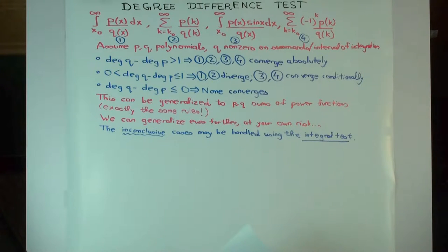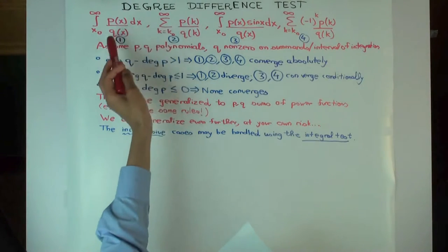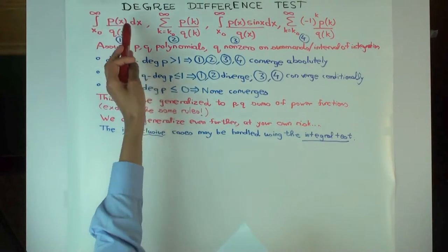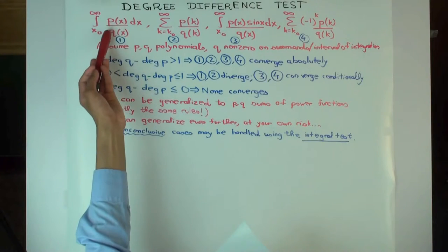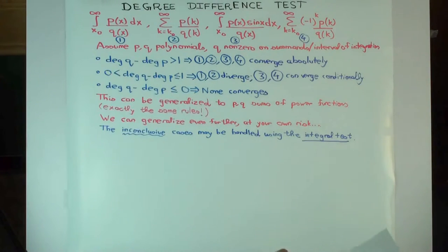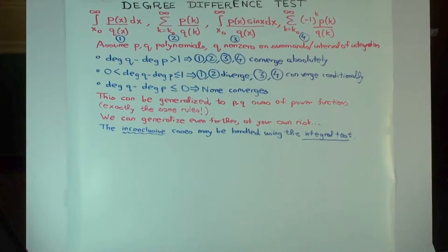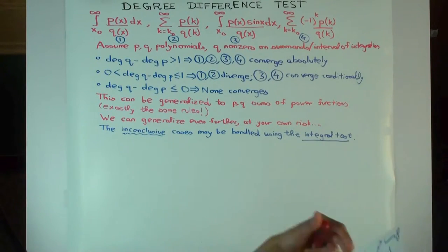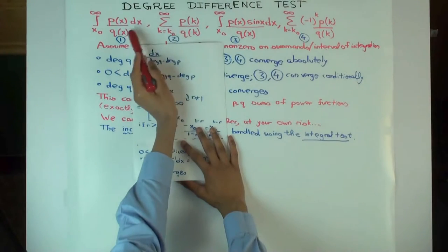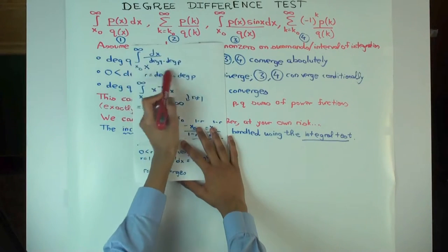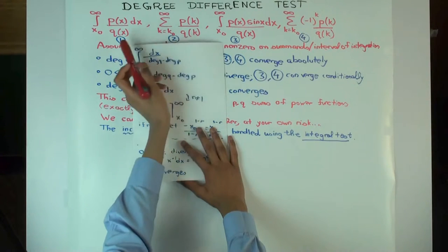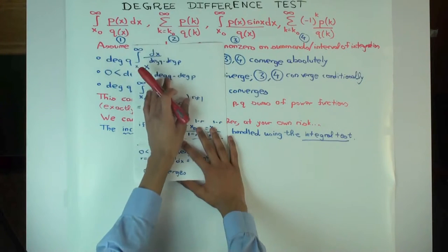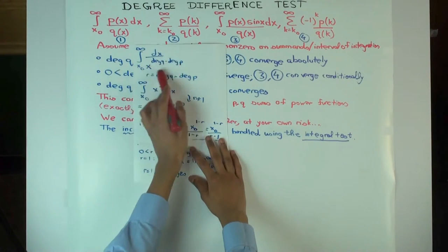Now, if you remember, how did we actually establish the degree difference test? We essentially converted the summations to integrals using the integral test, and the integrals we then converted to a simplified version of the integral by comparison, where you just had 1 over x to the degree q minus. So use integral test to go back and forth between these and then use a basic comparison or limit comparison to convert to this problem.